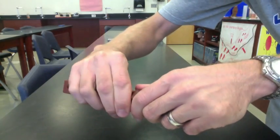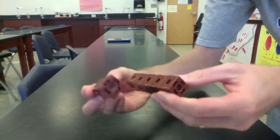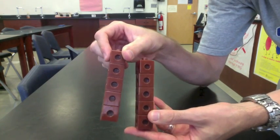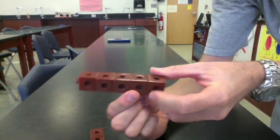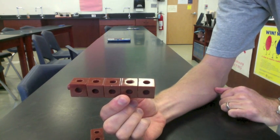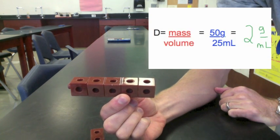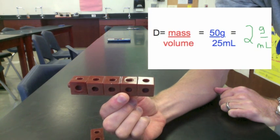If we break the object in half, let's see how it affects the density. This object now has a mass of 50 grams and a volume of 25 milliliters. The density is still 2 grams per milliliter.